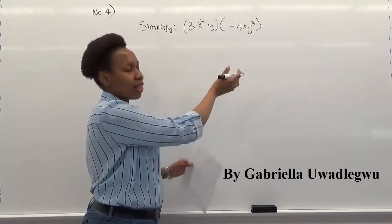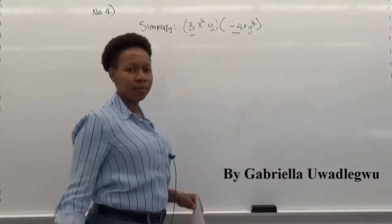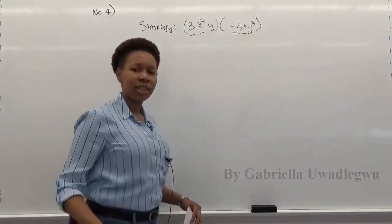Here we have, when we look at this expression, we have numbers. We can see them. We have 3 and negative 4. And also, we can see we have x. And we can also see that we have y.